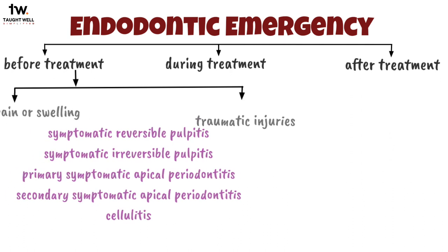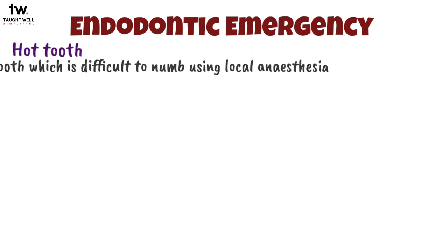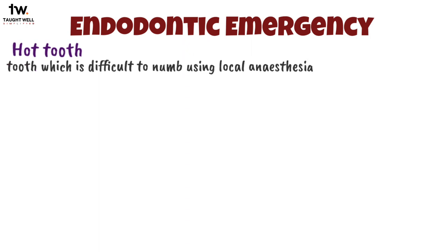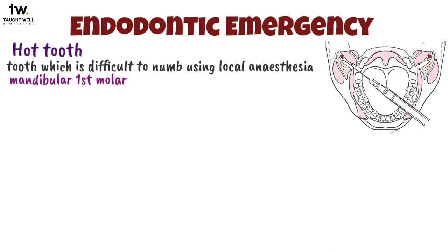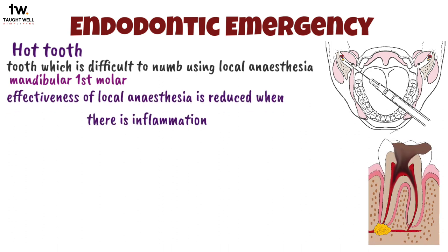Endodontic emergencies which occur during treatment are hot tooth and flare-up. A hot tooth basically means a tooth which is difficult to numb using local anesthesia. This phenomenon is most commonly seen in the mandibular first molar. After giving an inferior alveolar nerve block, the patient experiences numbness of the tongue and lip, but when attempting access opening, the patient has severe pain. The effectiveness of local anesthesia is also reduced when there is inflammation.